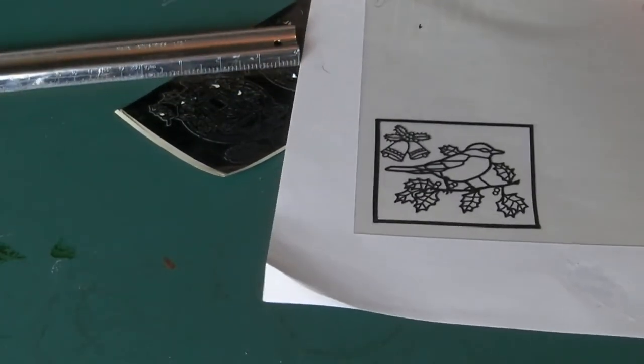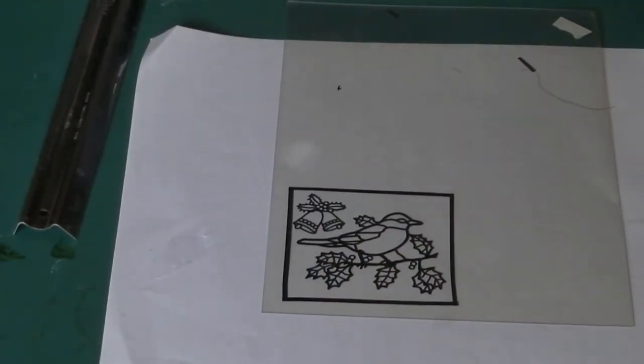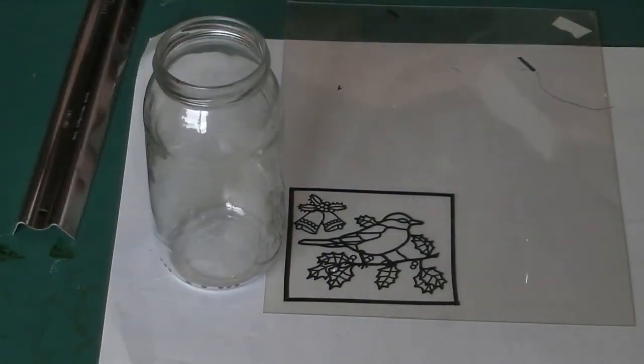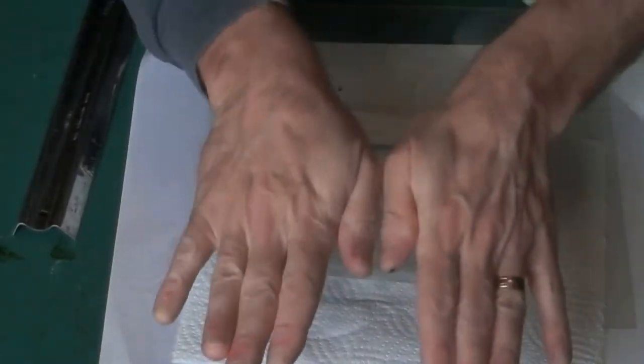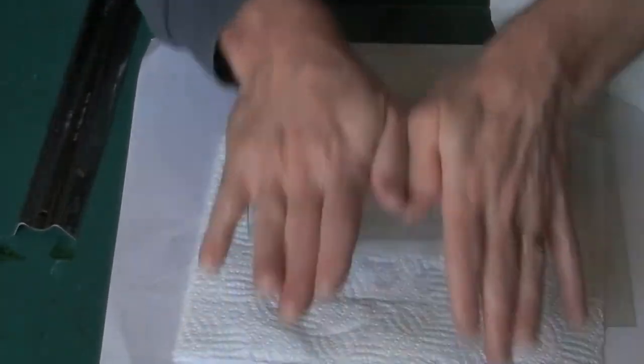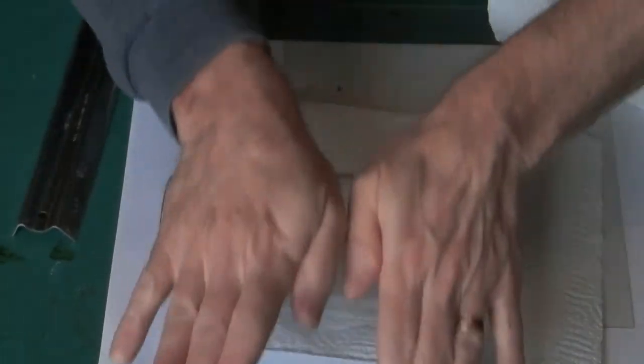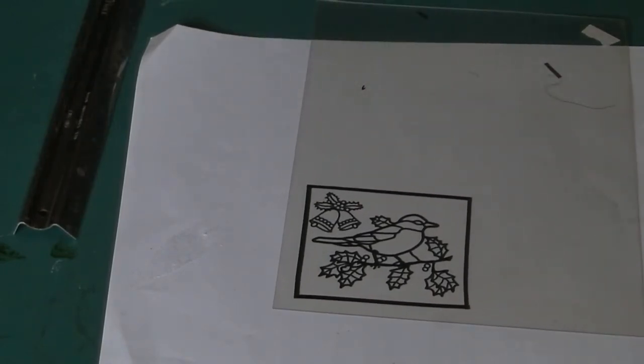Now like with adhesive lead, you're going to want to make sure this is well and truly stuck down before you start painting. If it's not, paint will seep underneath and you'll end up with a little bit of a mess. So to do that, I'm going to use a jar and a tissue.